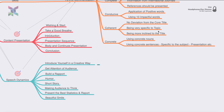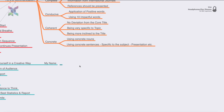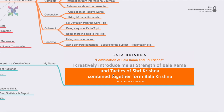For speech dynamics, introduce yourself in a creative way. For example, my name is Bala Krishna — a combination of Bala Rama and Sri Krishna. I creatively introduce myself as the strength of Bala Rama and the tactics of Sri Krishna combined. The first point where you create an impact with judges is how you introduce yourself creatively, making the judge completely interested in you.